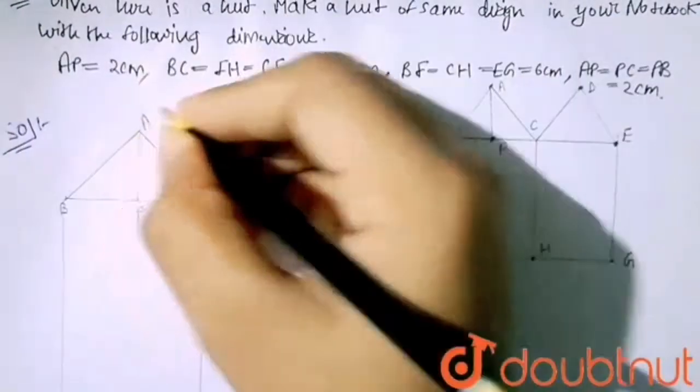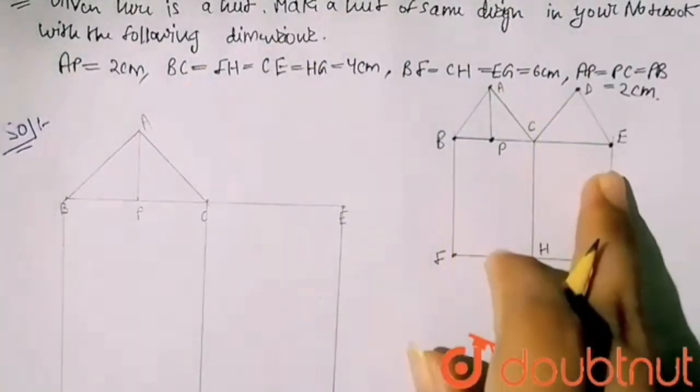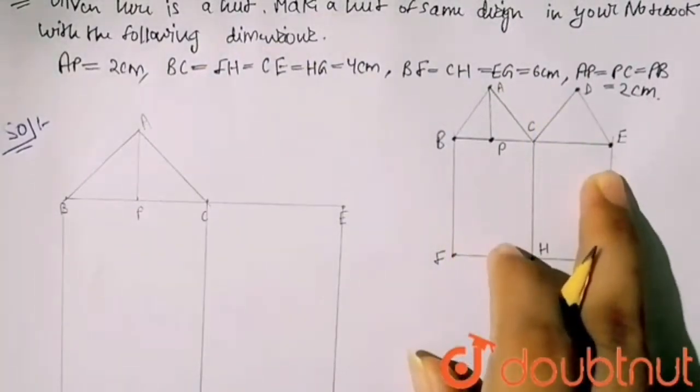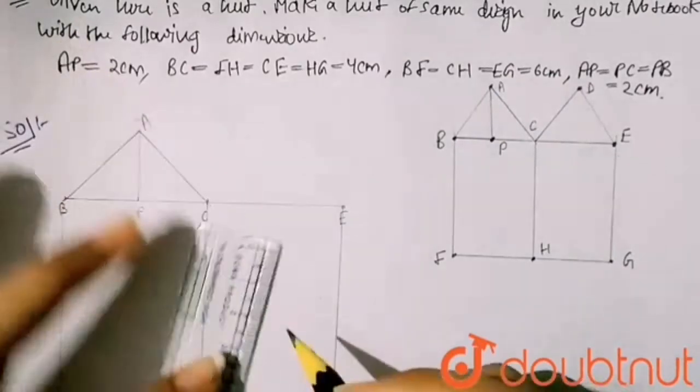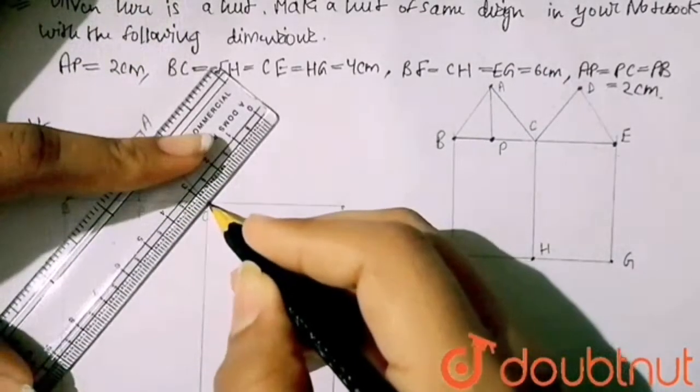And my DE - DE is also same, and DC is also 2 cm. So here it will be joined like this.